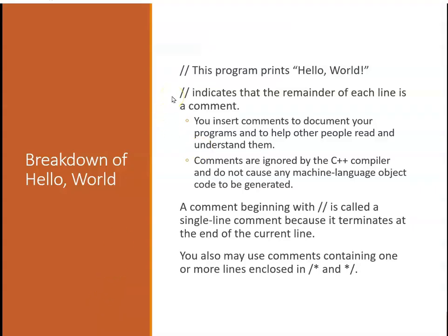Now we're going to go into greater detail breaking down Hello World. Here's our first comment: This program prints Hello World. The double slash indicates that the remainder of each line is a comment. You insert comments to document your program and the comments are ignored by the C++ compiler - they don't generate any machine code or do anything. A comment beginning with double slash is called a single line comment because it terminates at the end of the line. You can also use slash star and closing star slash to use comments across multiple lines.